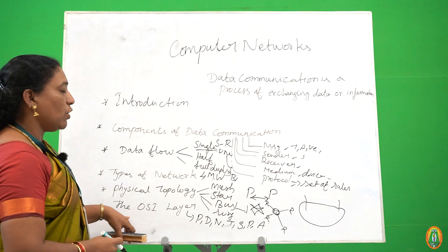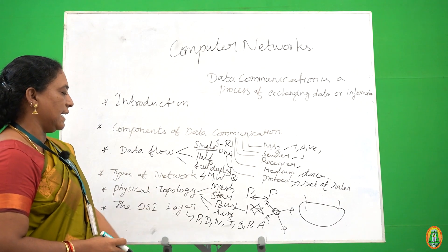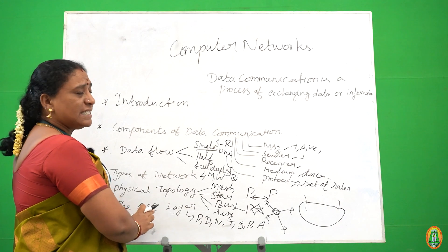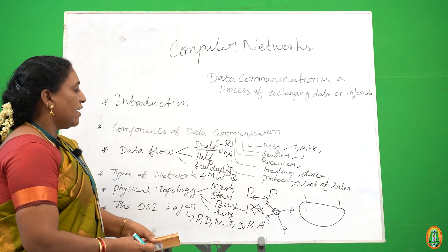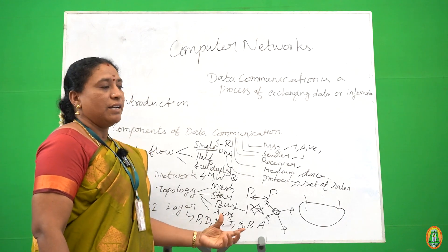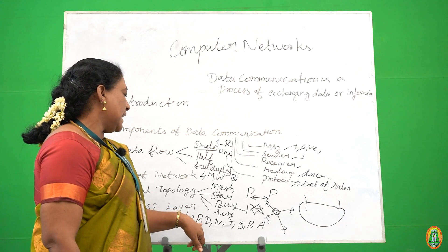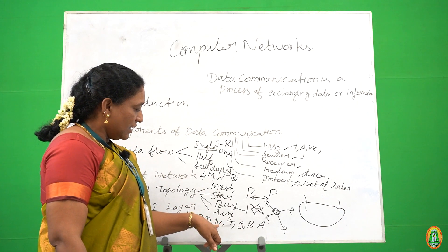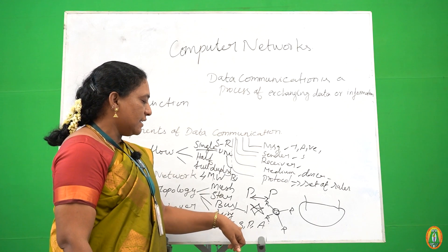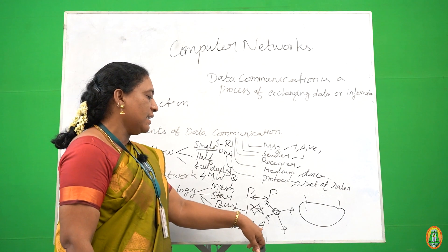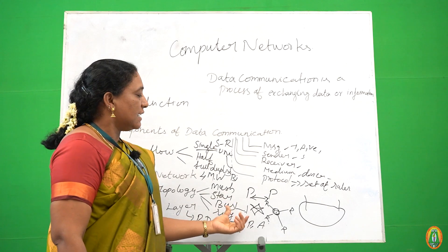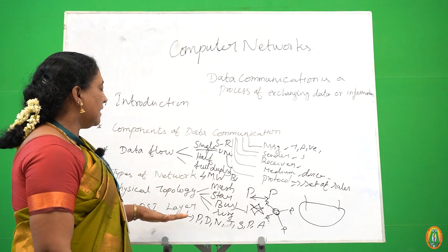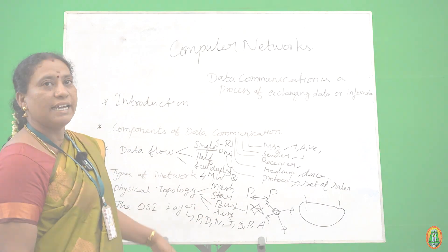And finally, we are going to discuss about the OSI layer. OSI layer means Open System Interconnection layer. We have seven layers: physical layer, data link layer, network layer, transport layer, session layer, presentation layer, and application layer. From the upcoming video, we will discuss the details of the OSI layer. Thank you.